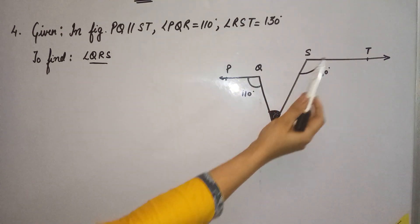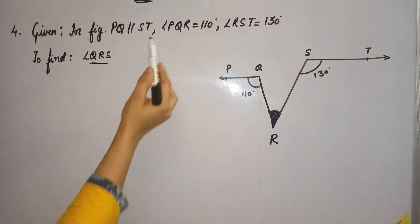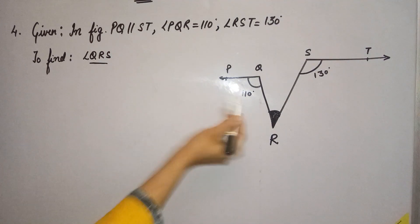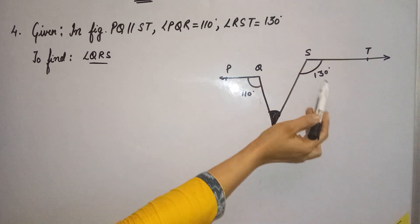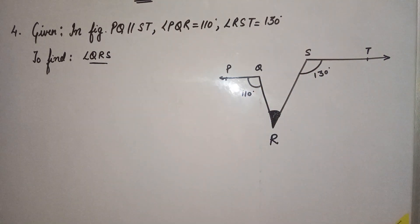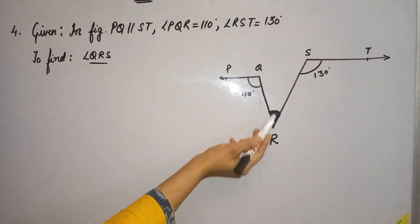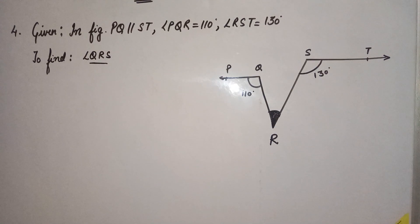So line PQ is parallel to line ST. Angle PQR is given to us as 110 degrees and angle RST is given as 130 degrees. We have to find out the shaded angle QRS.